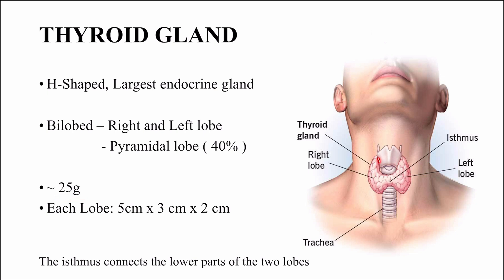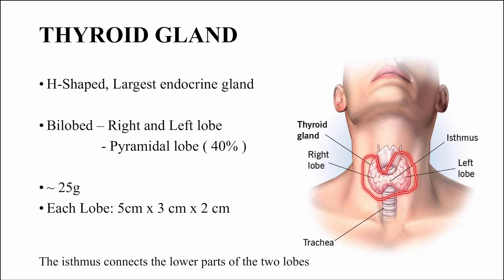It is bi-lobed, having the right and the left lobe. But in 40% of the population, we can also see an extra lobe — the pyramidal lobe. Each thyroid lobe is almost 5 cm in length, 3 cm in breadth, and 2 cm in thickness. But in females, during menstruation and pregnancy, the thyroid gland gets enlarged due to the high demand for iodine and hormonal changes.